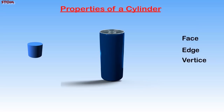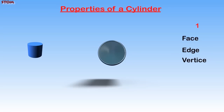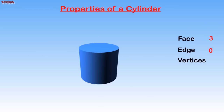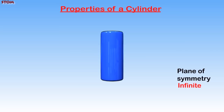Properties of a Cylinder. Let us consider the properties of a cylinder: the faces, the edges, the vertices, as well as the planes of symmetry. Looking at a cylinder, we can see that it has one, two, and three faces. A cylinder has no edges and no vertices. A cylinder has infinite planes of symmetry, meaning that the plane of symmetry cannot be counted.